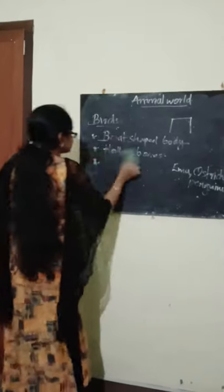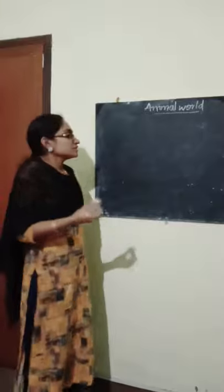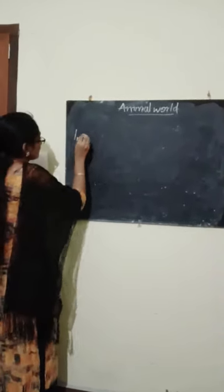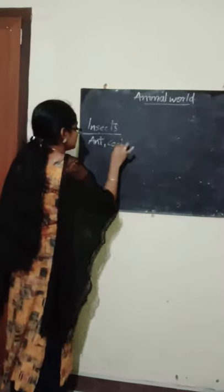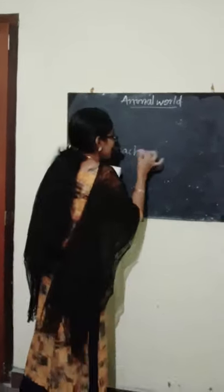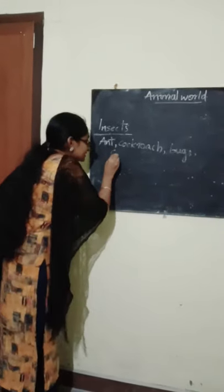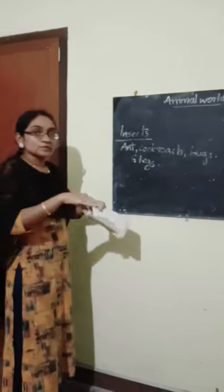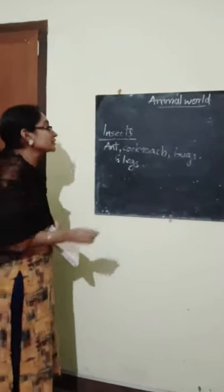Now, we are going to talk about insects. While considering insects, some have six legs, some have wings, and some have many legs. For ant, cockroach, and bugs — all these insects have six legs. They just crawl through the ground using these six legs.